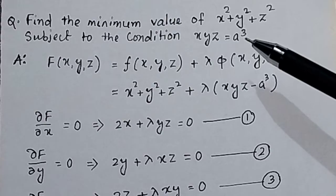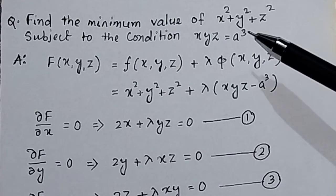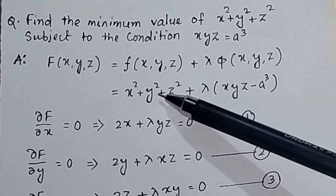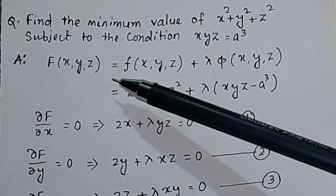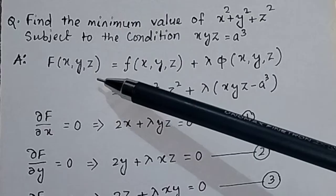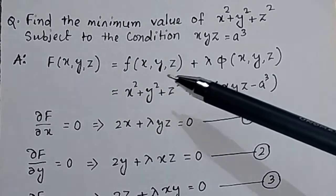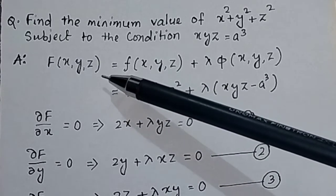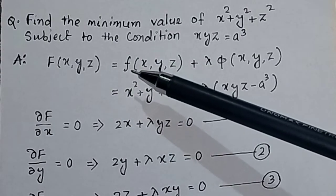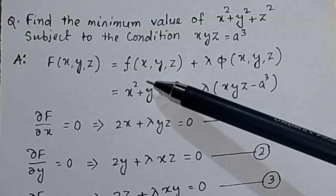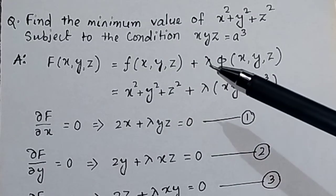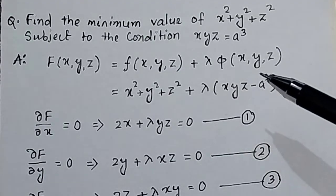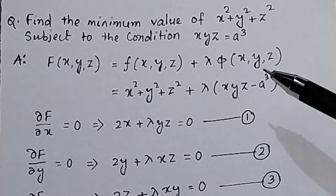We will solve this using constraint maximization with a Lagrangian multiplier. The Lagrangian equation for constraint optimization is given by L(x,y,z) = f(x,y,z) + λφ(x,y,z). Here f(x,y,z) is called the objective function, λ is called the Lagrangian multiplier, and φ(x,y,z) is called the constraint or condition.